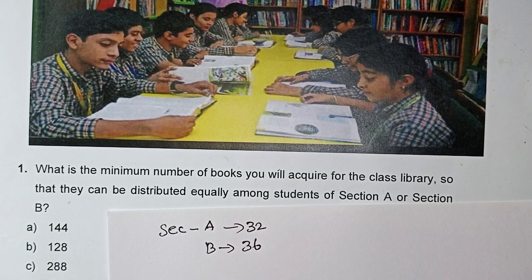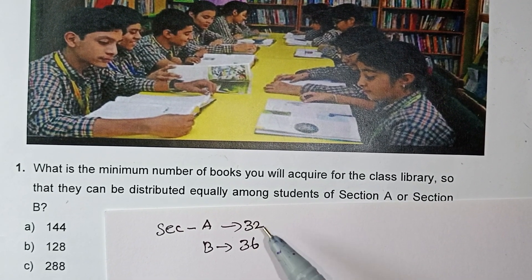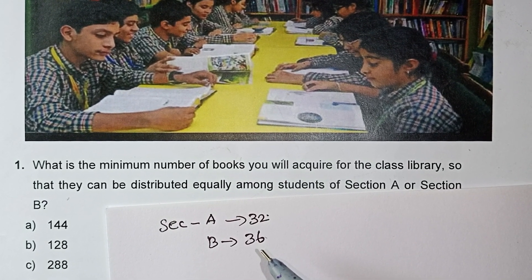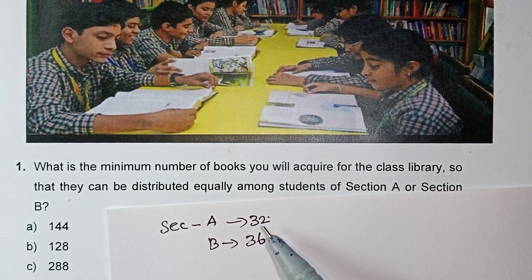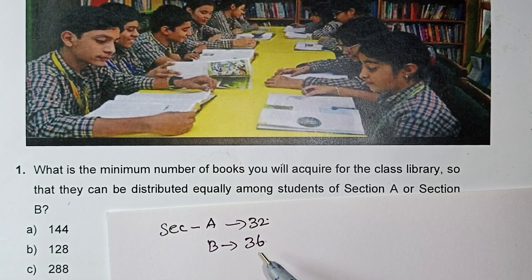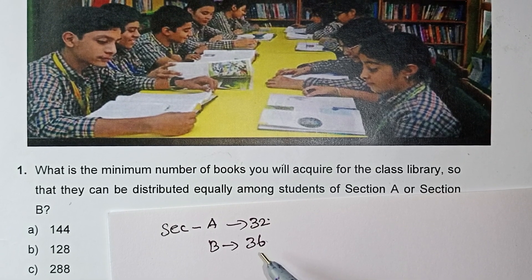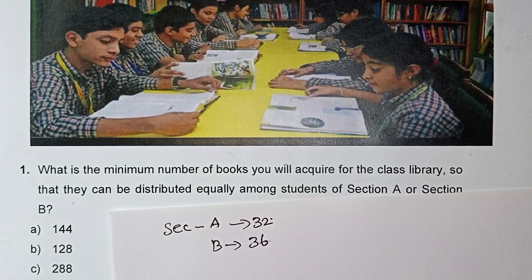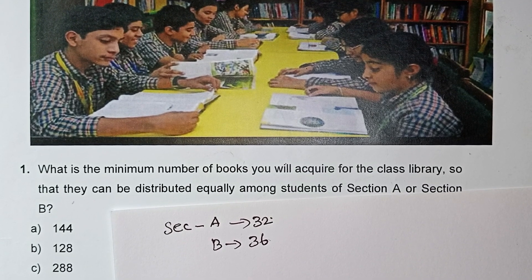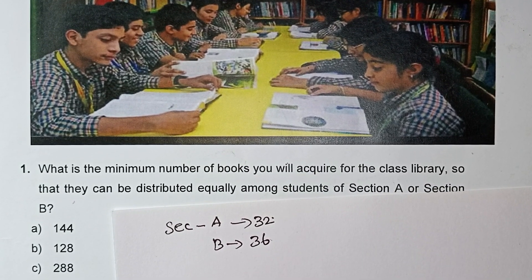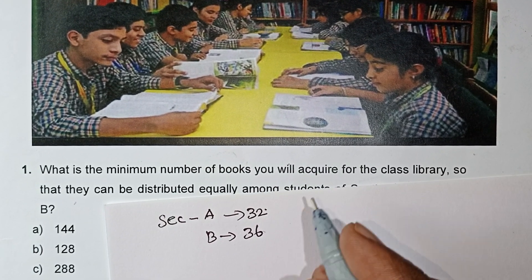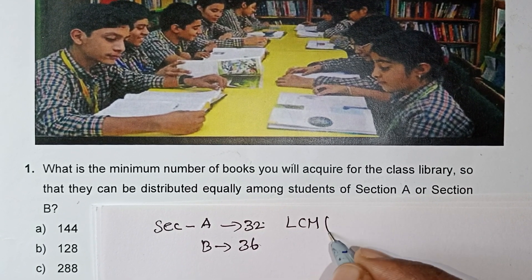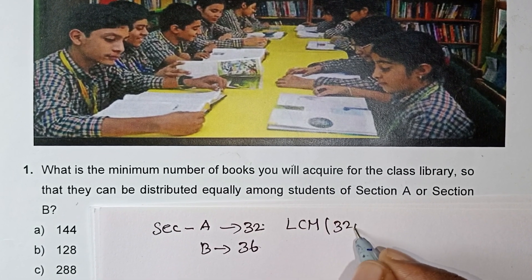Let's look at the answer. The minimum number of books which you will acquire — 32's multiples and 36's multiples. Their common multiple is the number of books that can be equally distributed. So the number is the LCM of 32 and 36.